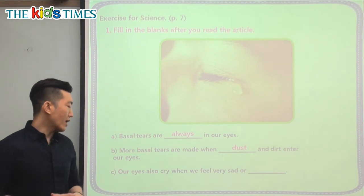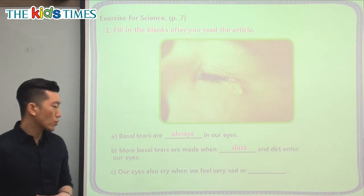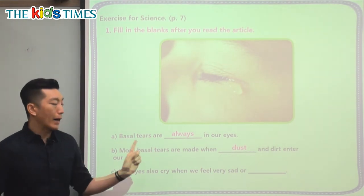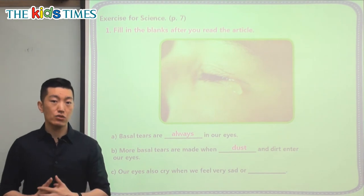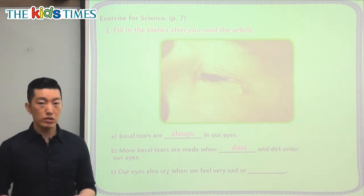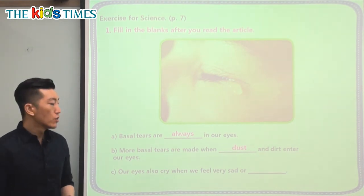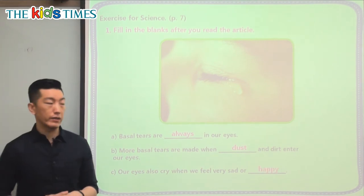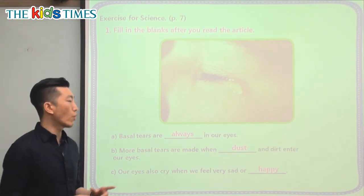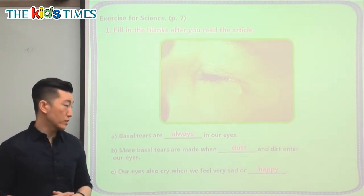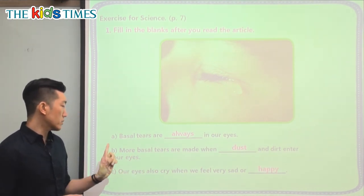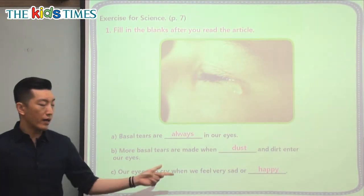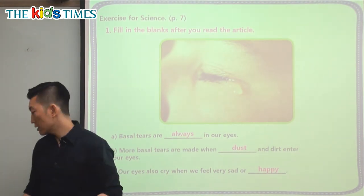Our eyes also cry when we feel very sad or — what is the opposite of sad? — very happy. These are types of emotional tears. So we said very sad or very happy produce emotional tears. Those are the different types of tears: basal tears, reflex tears, and emotional tears.